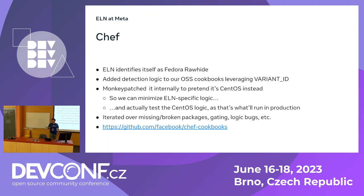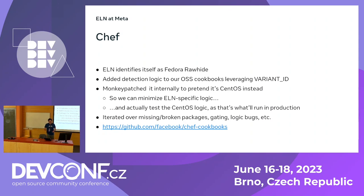After that, it was just the usual loop of testing on a machine, iterating, finding that a package is missing and adding it to ELN Extras, or finding logic that's hard-coding CentOS 9 but can actually just be flipped to make it more generic. Our open source cookbooks are there — there isn't much that's ELN-specific in there, but I put the link in case you're interested. If you use Puppet or Ansible or anything else, I expect it will be roughly similar. I frankly expected this to be a major pain, and it turned out to be very straightforward.